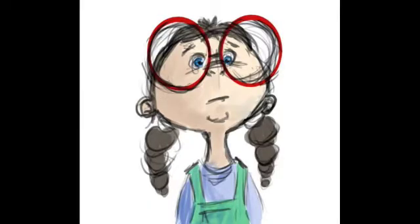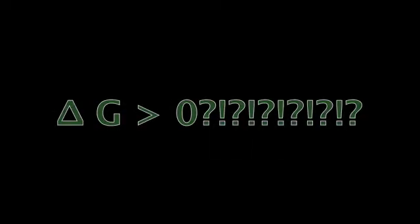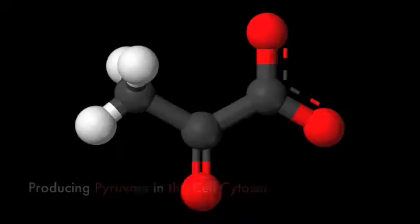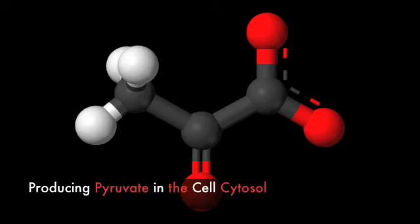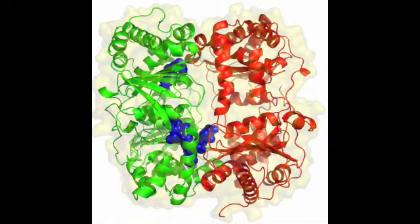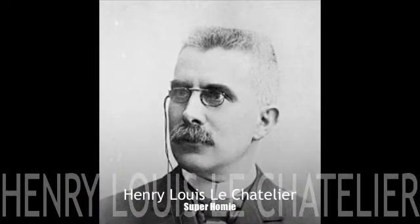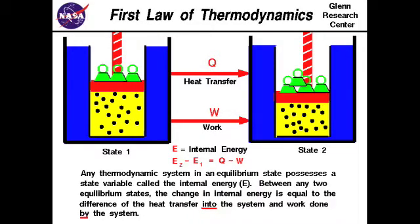Everything happens within the cellular matrix. Is your delta G much greater than zero? In vivo, that process, it's illegal. Producing pyruvate in the cell cytosol. I am an enzyme, controlling all of y'all. I'm kicking it with my homie Dr. Le Chatelier. With thermodynamics, we decide the right way.